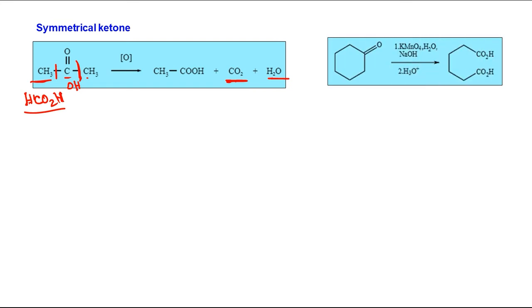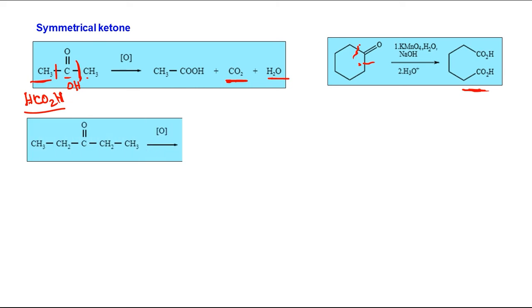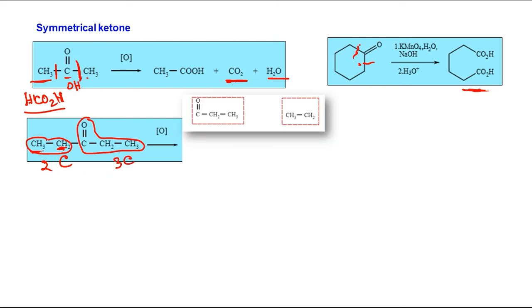Another example of symmetrical ketone — now it is cyclic, with a total of six carbons. Both sides are the same, so whichever C-C bond you consider, in both cases you will get the same product. A third example of symmetrical ketone: now we have two carbons on both sides of the carbonyl group. If we consider the fragment CH3CH2CO and from the other side CH3CH2 — that is two carbons and three carbons.